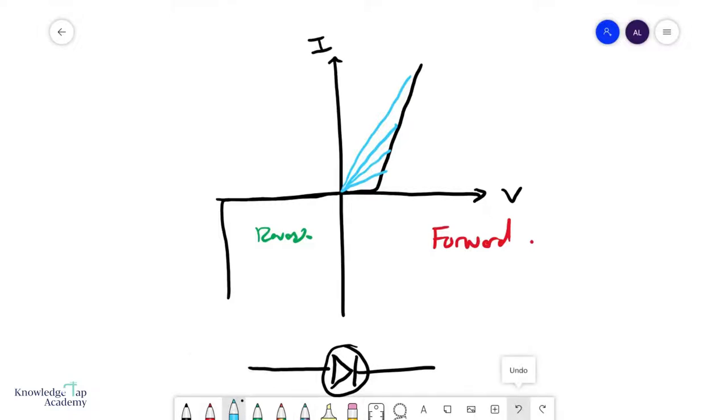There is typically a minimum voltage over here, where the diode begins to behave like a short circuit. And this can vary from diode to diode, but typically this value over here is around 0.6 volts to 0.8 volts.